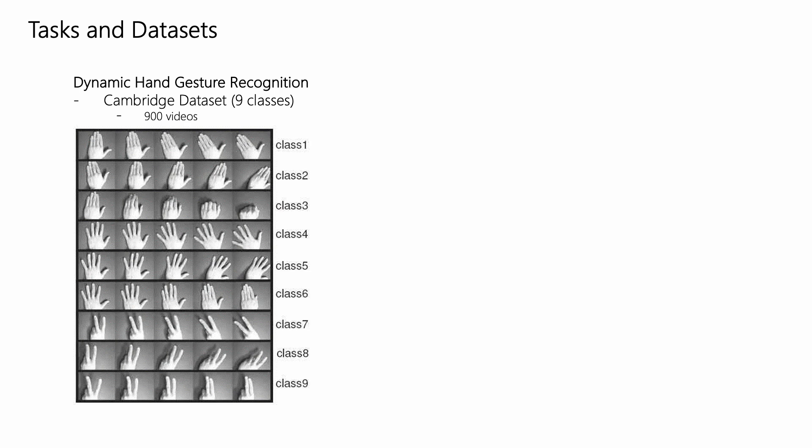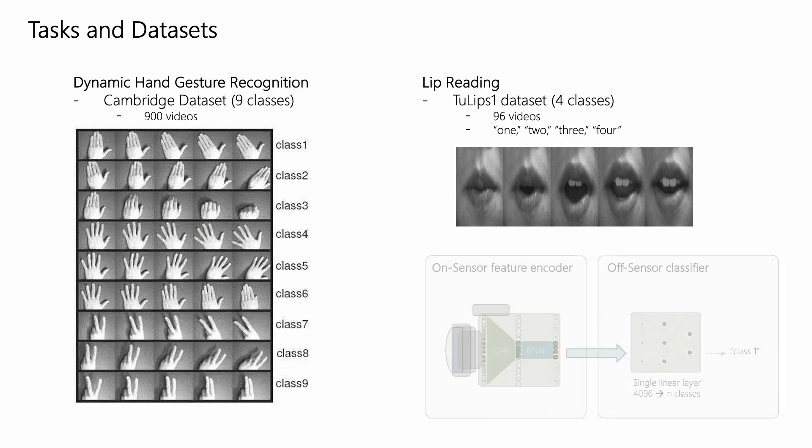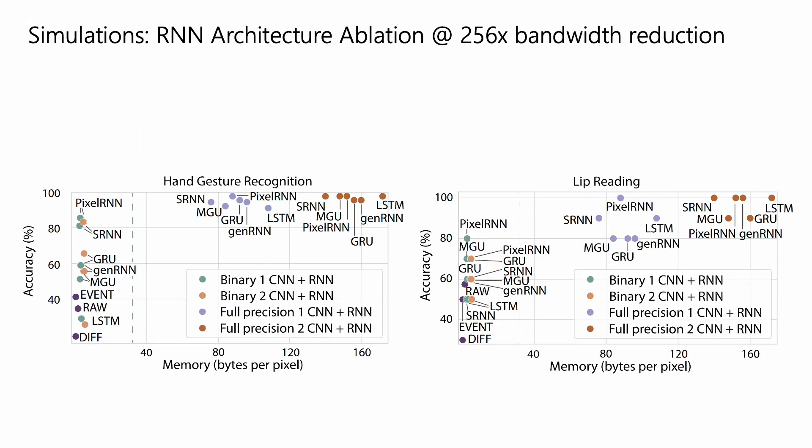We perform our experiments on two tasks, dynamic hand gesture recognition and lip reading. In all models, a single fully connected layer off sensor follows for the classification task. We tested each RNN with both a single and two-layer CNN.